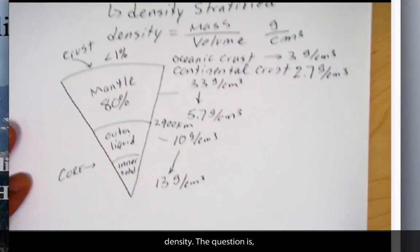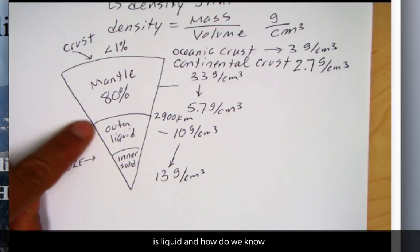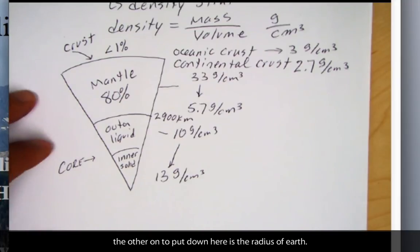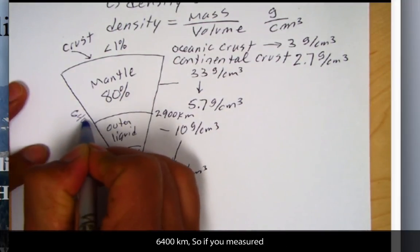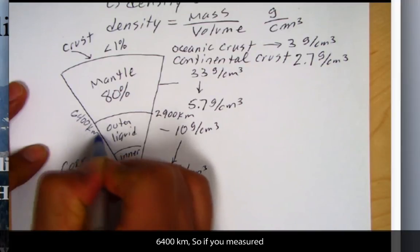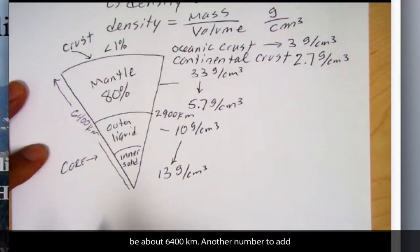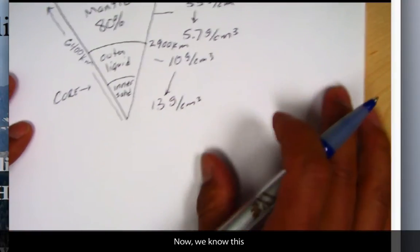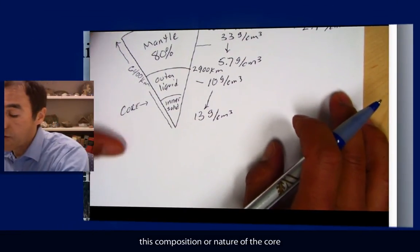The next question is, how do we know that the outer core is liquid? And how do we know the core is 2,900 kilometers deep? The other number I want to put down here is the radius of Earth, 6,400 kilometers. So, if we measured from the core out to the surface here, it'd be about 6,400 kilometers. Now, we know this composition, or at least the nature of the core, based on seismic waves.